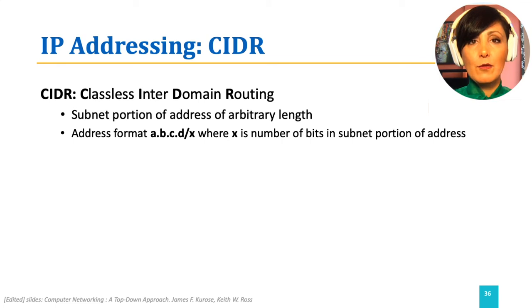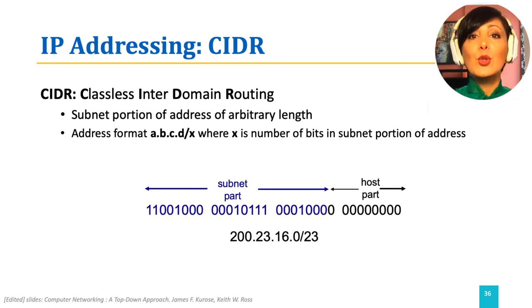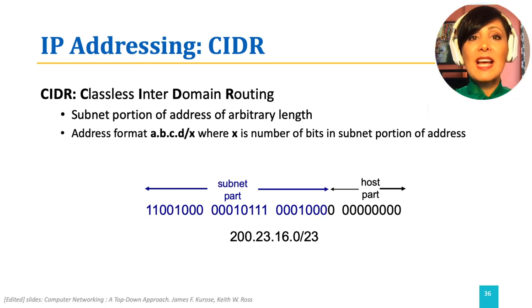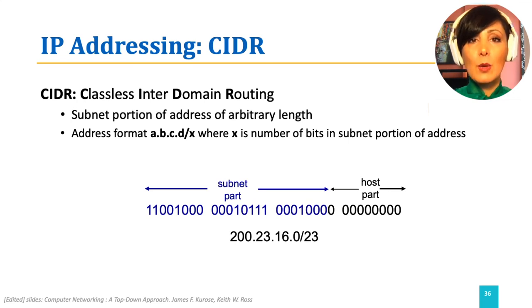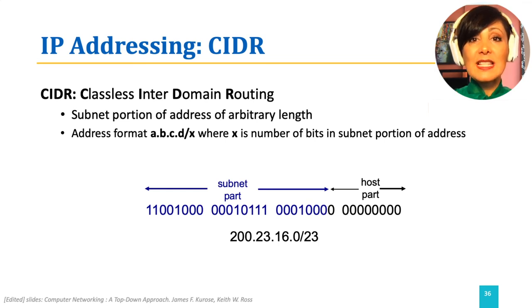For example, in this IP address, 23 bits from the left — which if read as decimal numbers would be 200, 23, and 16 — define the subnet part of this address. The rest, which are 9 bits, will specify the host part. The devices that are within the subnet should use the host part. You can assign them using these bits.